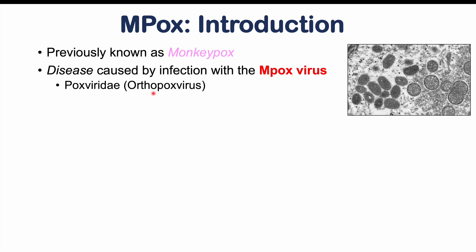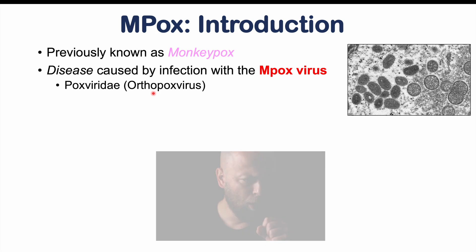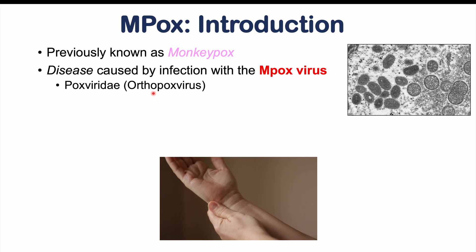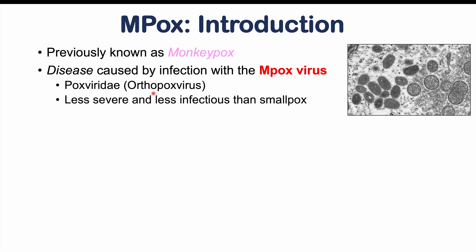M-pox can cause a prodromal or flu-like illness at first, and then cause a rash later, so it looks like smallpox, but it's not going to be as severe and it's less infectious. M-pox virus is a relatively large virus, often described as brick-like in appearance, and it is a double-stranded DNA virus.